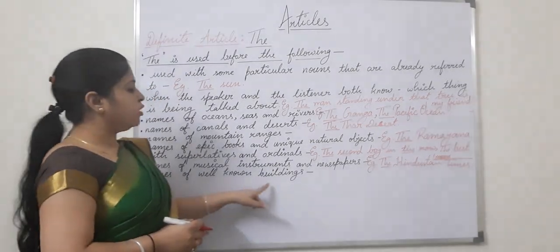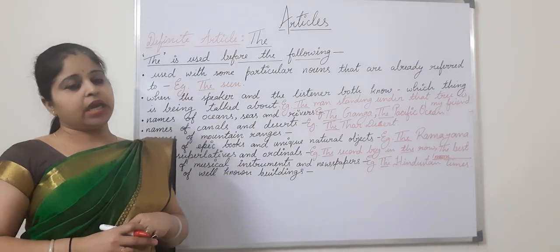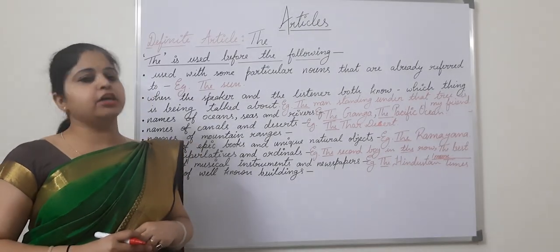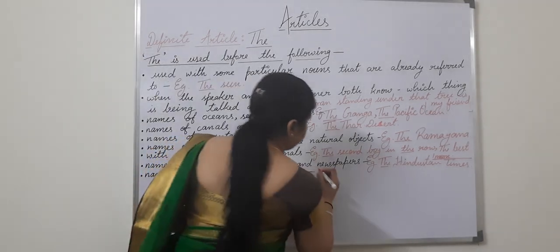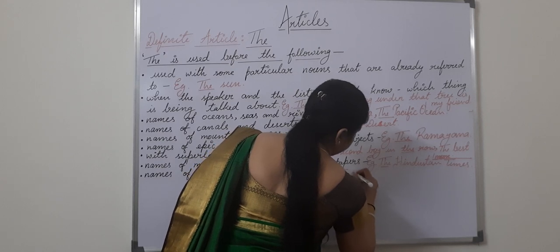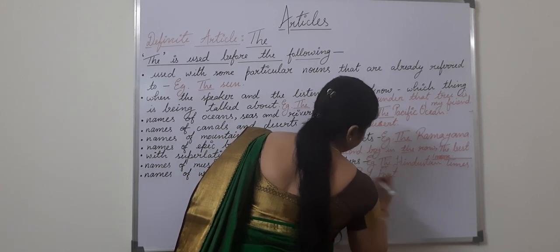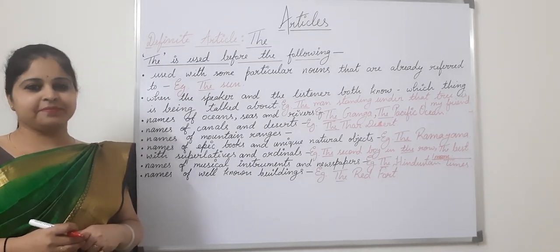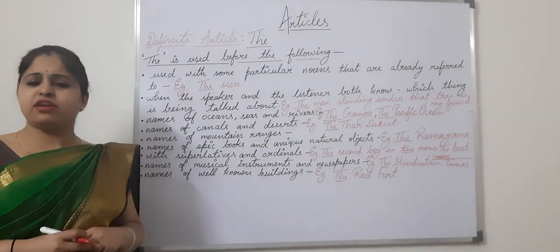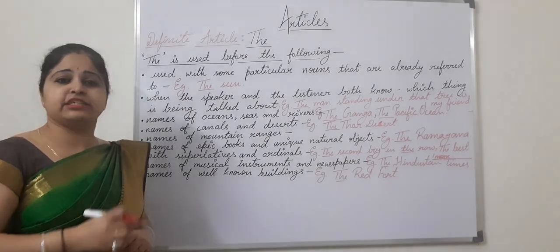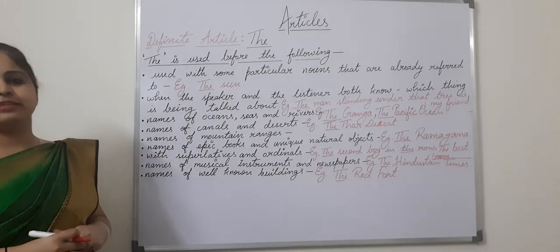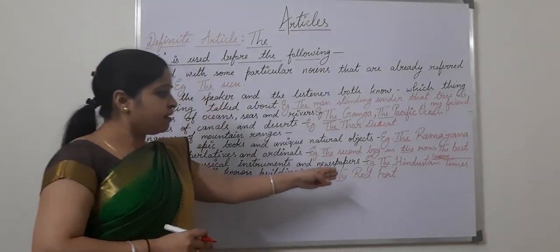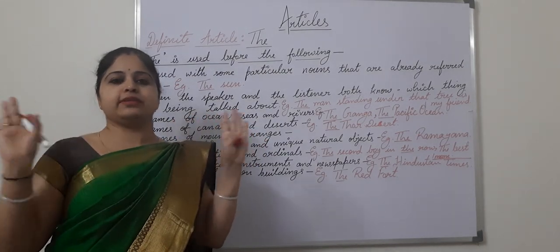Next: names of well-known buildings and monuments also carry the definite article 'the' before them. Such as 'the Red Fort' and 'the Taj Mahal' — very special in the world, clearly indicated. Whenever you talk about the Taj Mahal or the Red Fort, they are clearly indicated in the world.